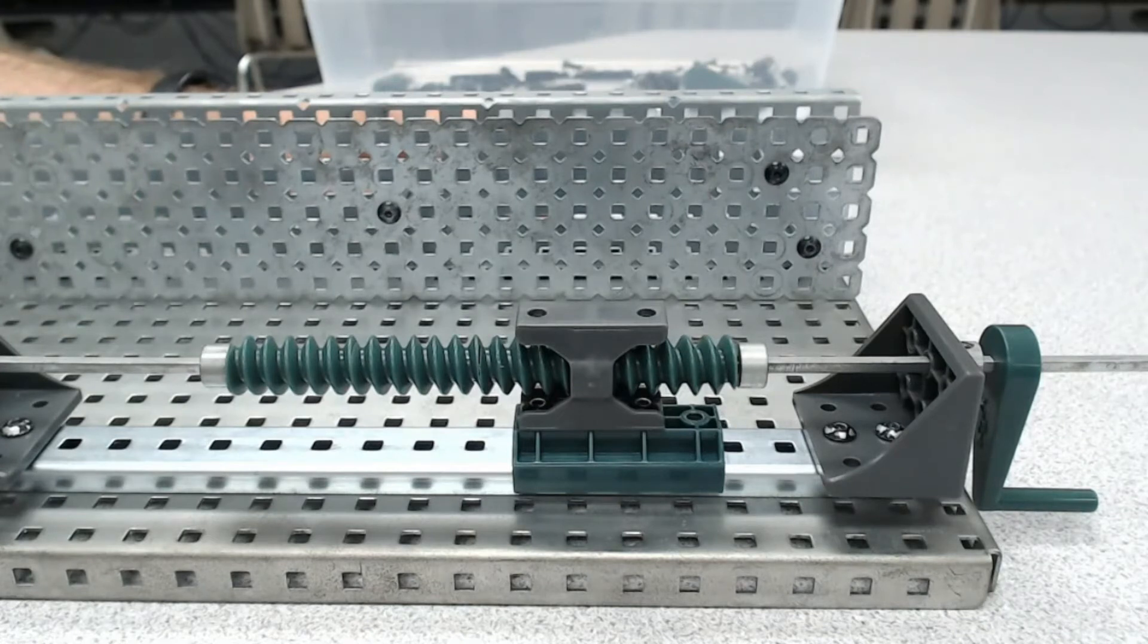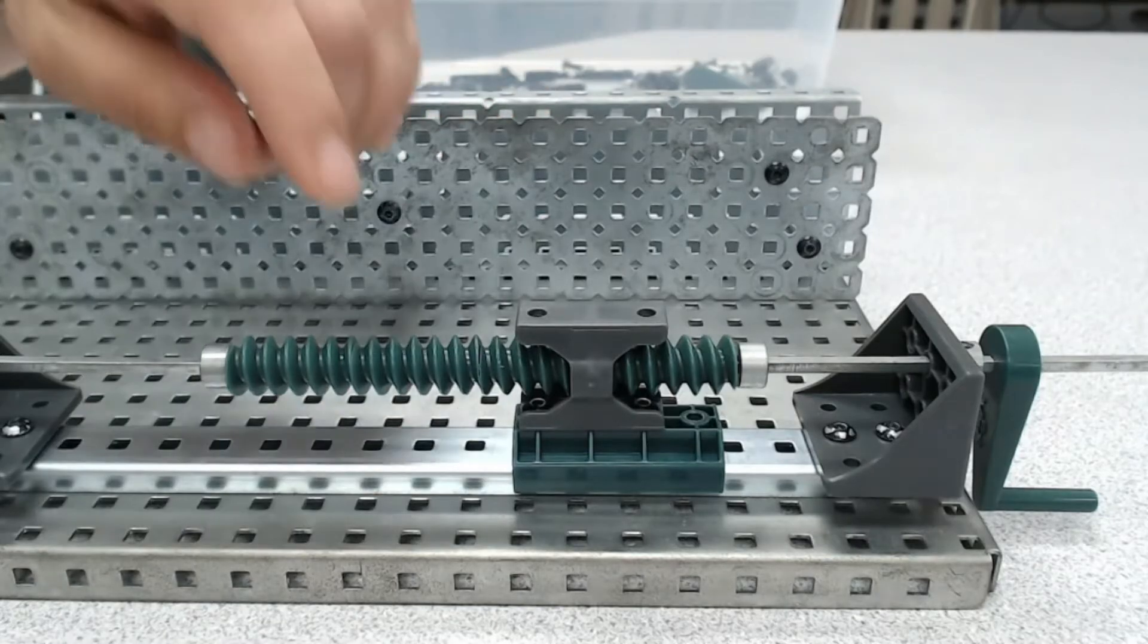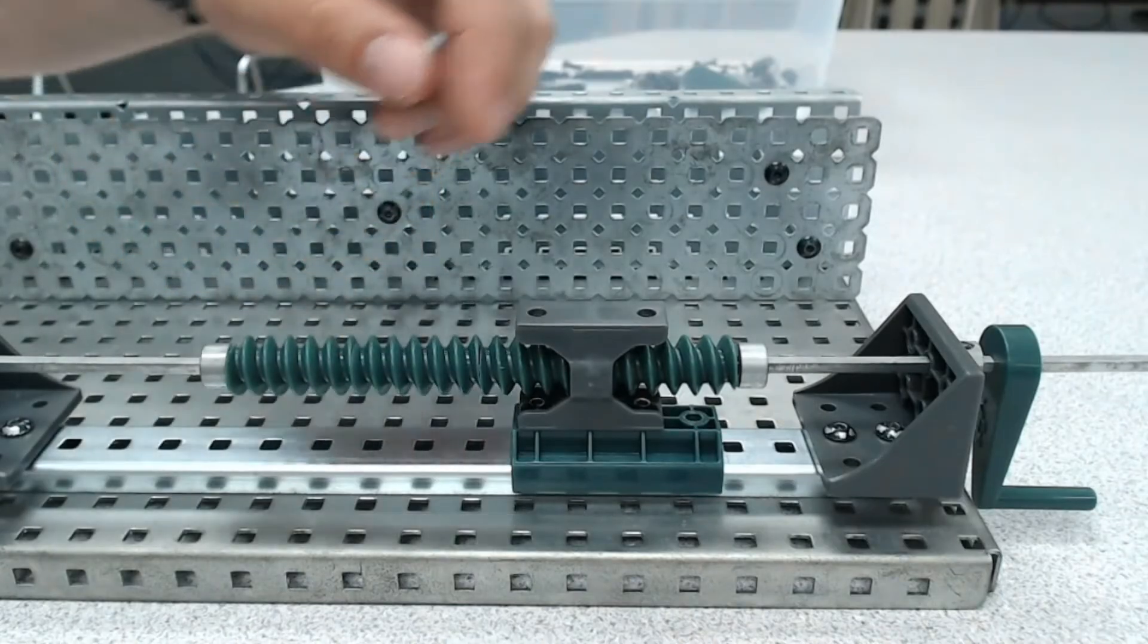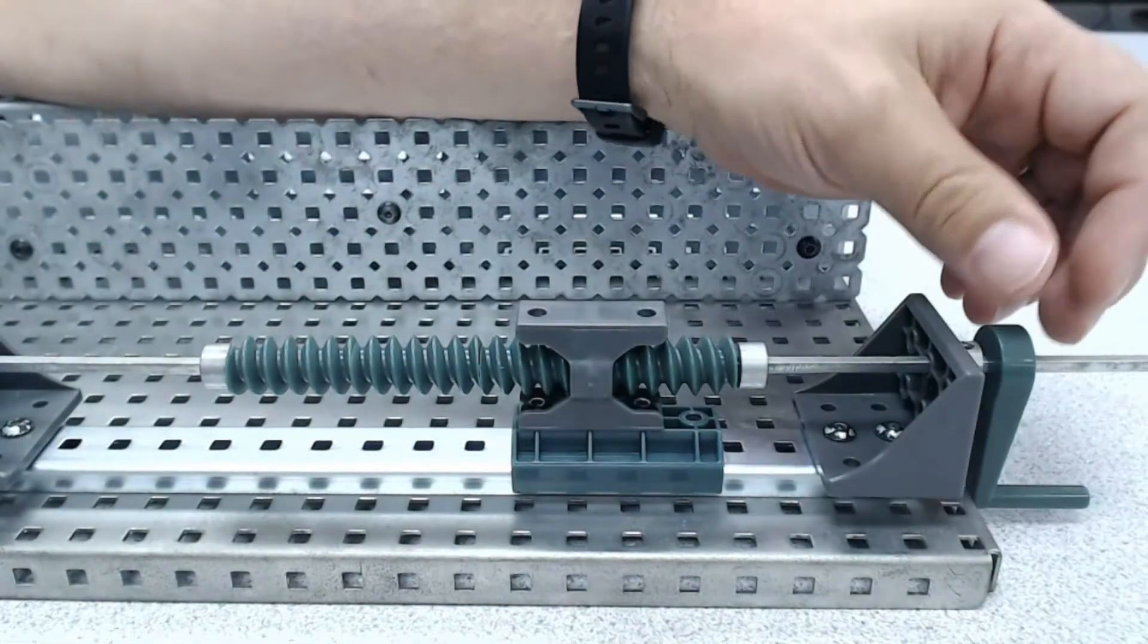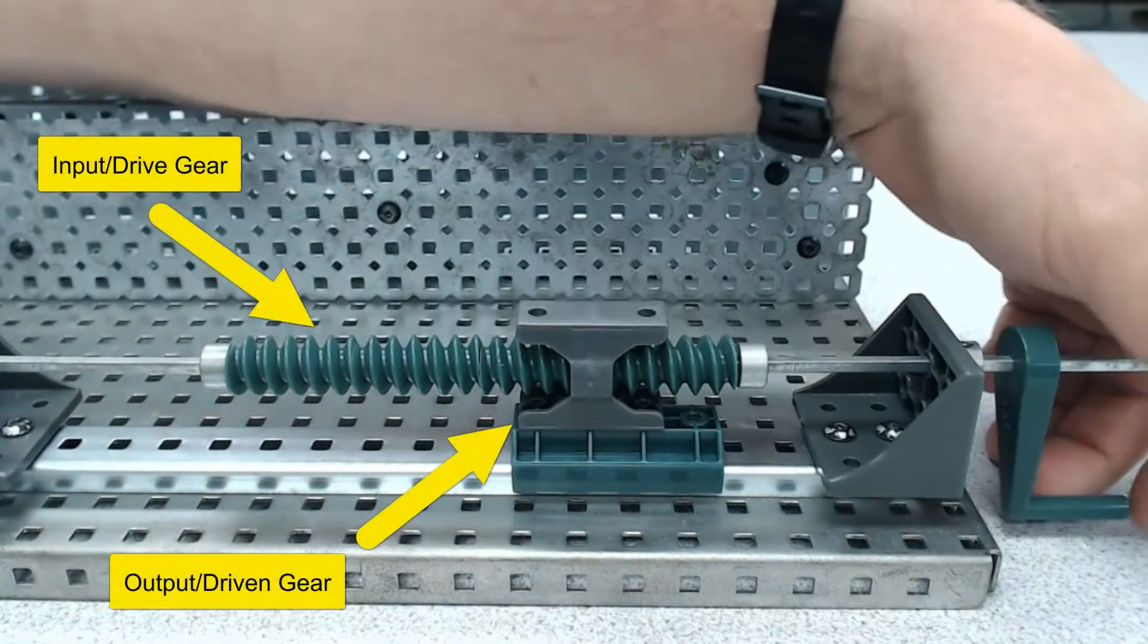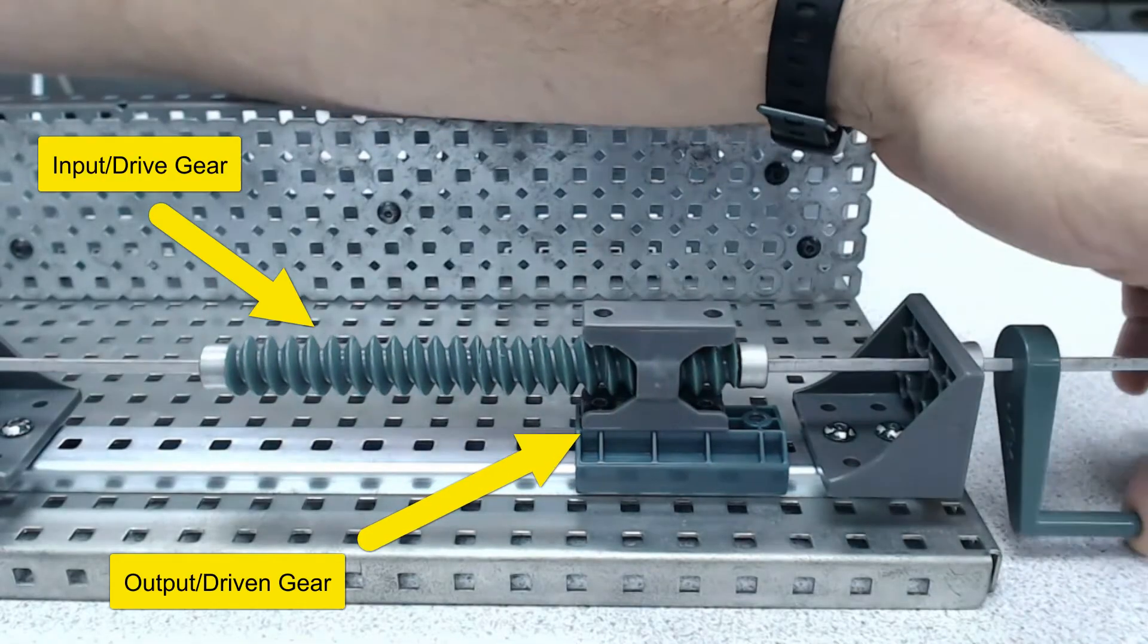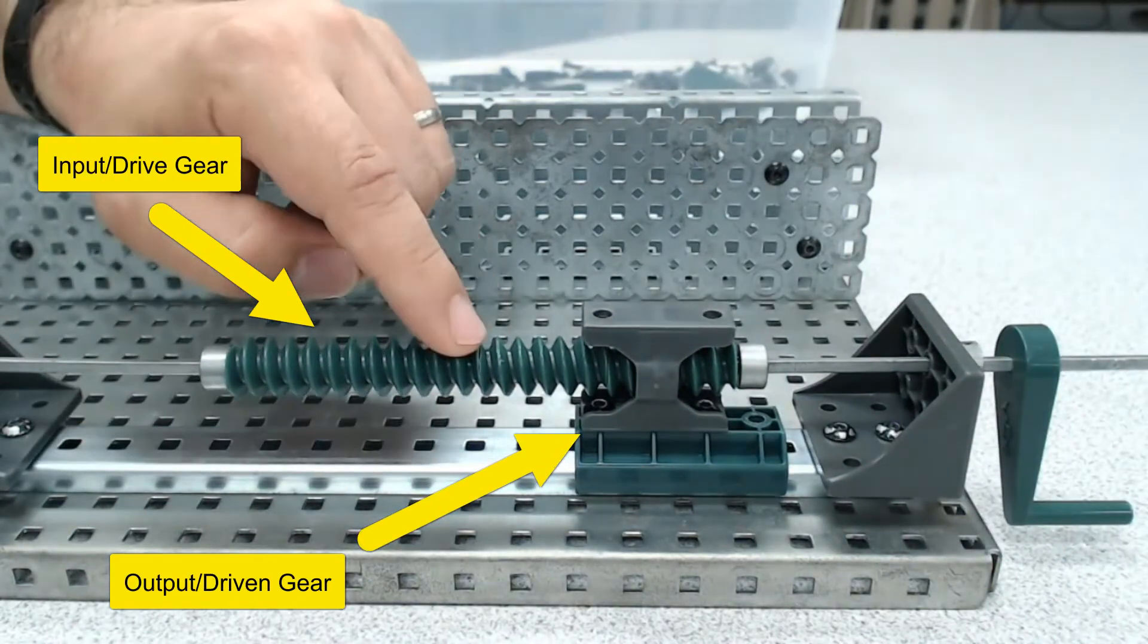The first thing that we want to do is identify the input and output. So looking at this assembly, which of these do you feel is the input? If you identified the worm gear as the input, you would be correct. You may have noticed that the handle is over here and the handle is connected to the drive shaft, and the drive shaft is running through the worm gear. So as I turn this, it's the worm gear I'm directly manipulating. So the worm gear is our input. The lead screw nut is our output.